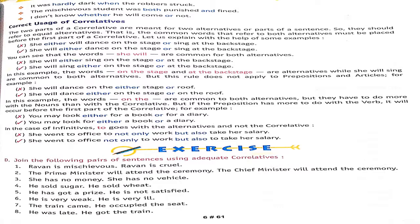Your question D is: Join the following pairs of sentences using adequate correlatives. First one you can see: Ravan is mischievous. Ravan is cruel. So what will we do?